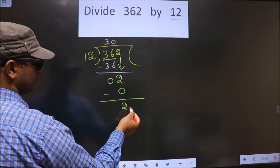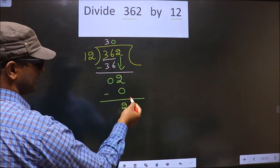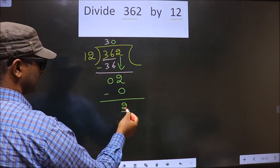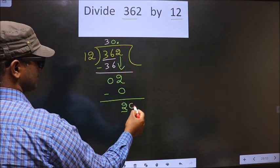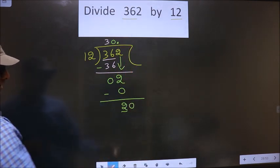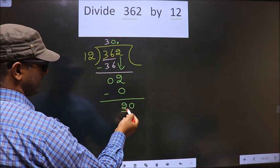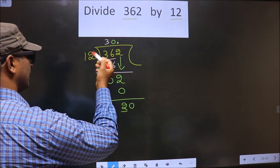Here we did not bring any number down. Now 2 is smaller than 12, so now you can put a decimal and take 0 here. Now here we have 20. A number close to 20 in the 12 table is 12 once, 12.